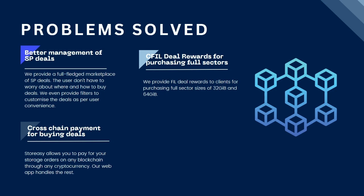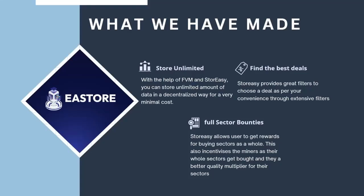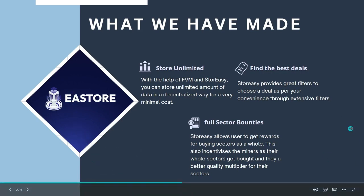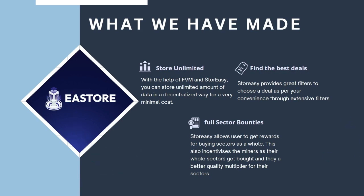Many chains have been integrated on our app. The second thing we came to know about was storage sectors. Sectors are the units in which files get stored in the FVM network. We found that if a sector is not completely filled, trash data gets filled in — it gets published with wasted space. Too much space was being wasted on the Filecoin network.